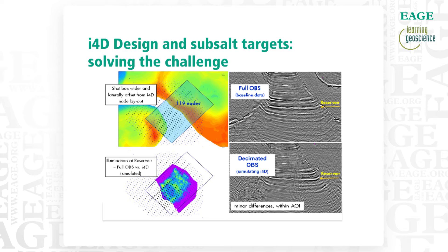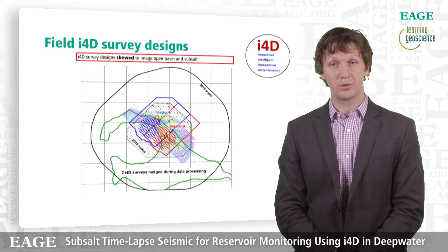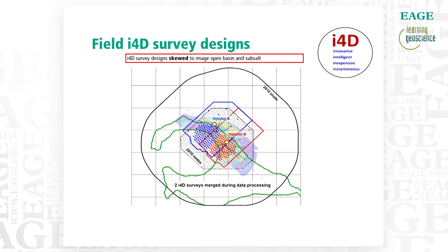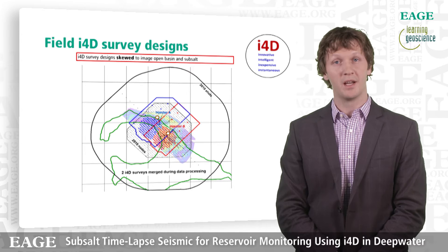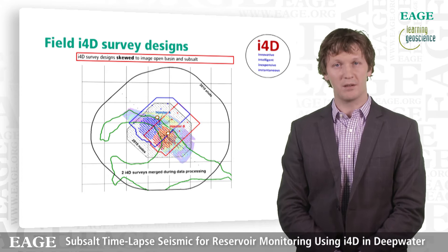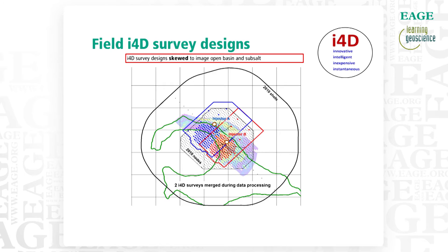When it came to actually planning the surveys, we had to have two node patches due to vessel limitations — the vessel could only hold about 120 nodes. So we had one node patch toward the southeast covering injector B, and after that survey was conducted, we laid down the nodes again on the northwest covering injector A and reshoot that survey. These two surveys were merged later in processing. You can see the shot boxes for both in red and blue overlaid on the full field node patch and shot box — showing how much larger the full field shot box is and where the real advantage of this technique lies: a much smaller shot box, smaller node patch, lower cost, but with appropriate planning, great 4D repeatability in the area of interest.